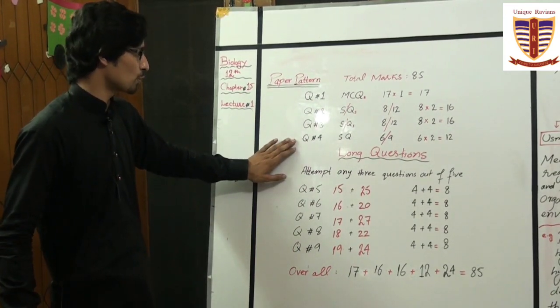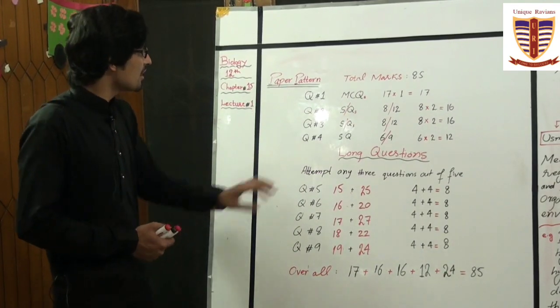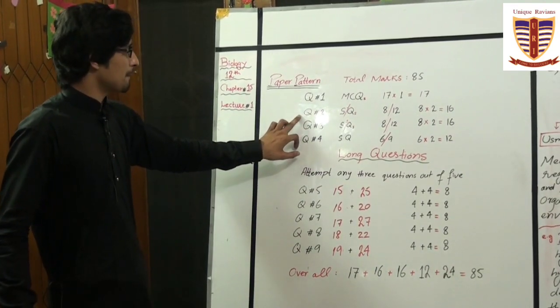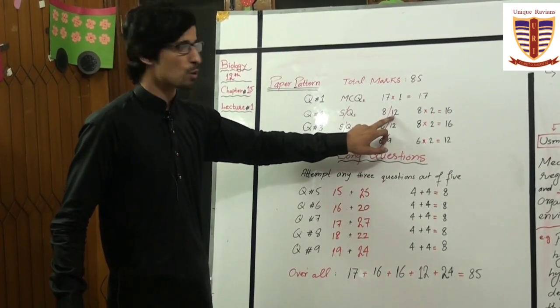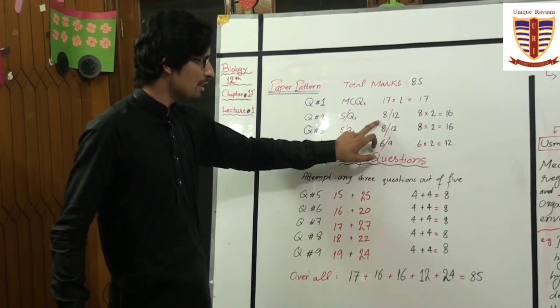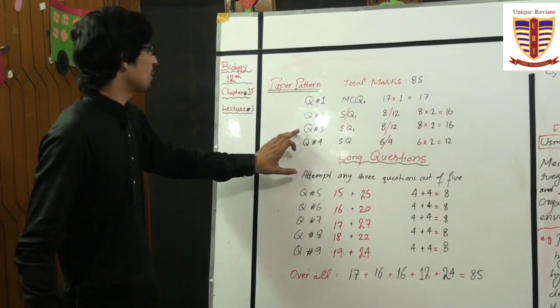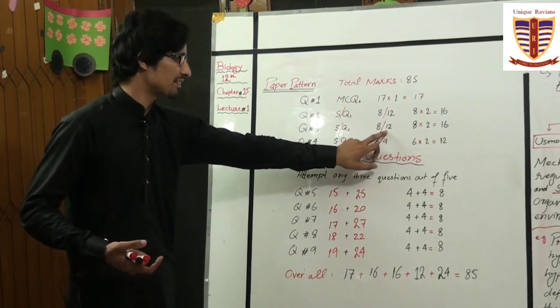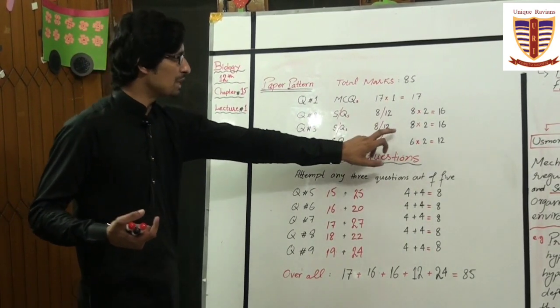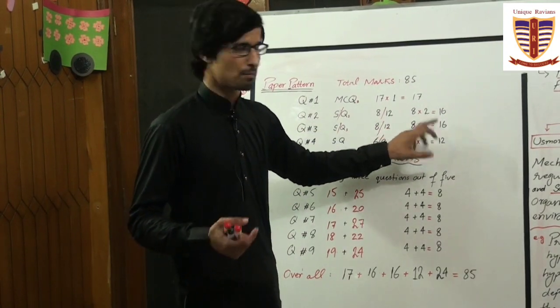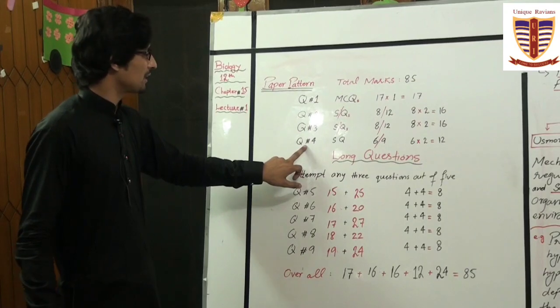These three are different segments of short questions. Question number 2 has total 12 short questions and you have to attempt only 8 questions out of 12, so 8 multiplied by 2 is equal to 16 marks. Similarly, question number 3 consists of 12 short questions and we have to do only 8 questions, so 8 multiplied by 2 is equal to 16 marks.